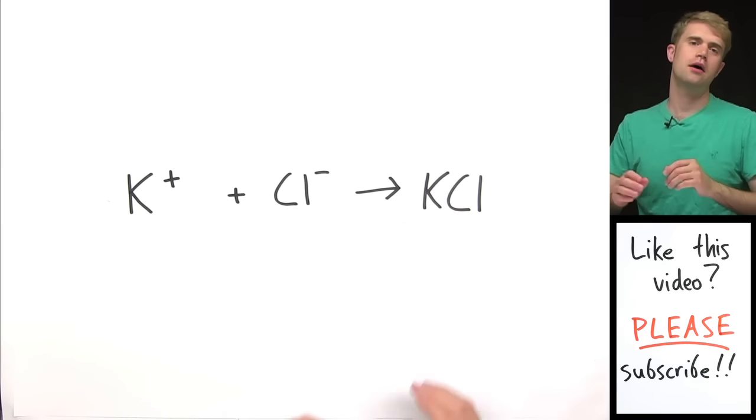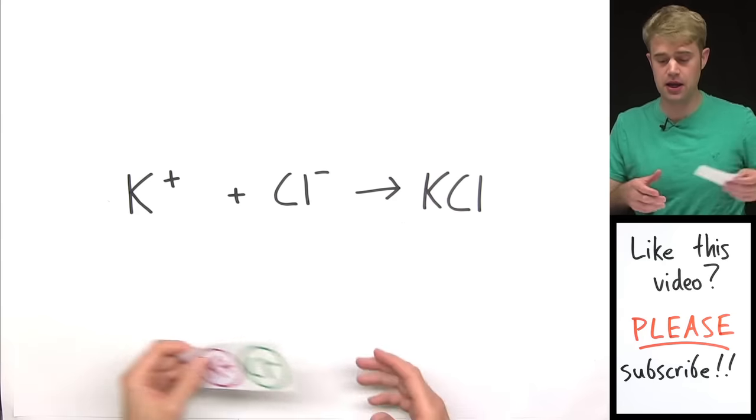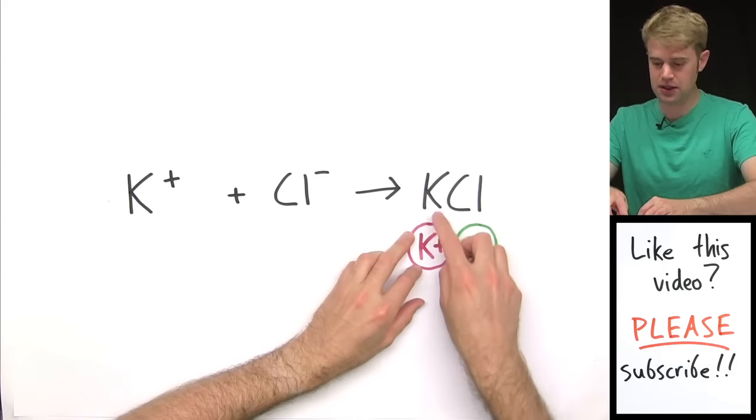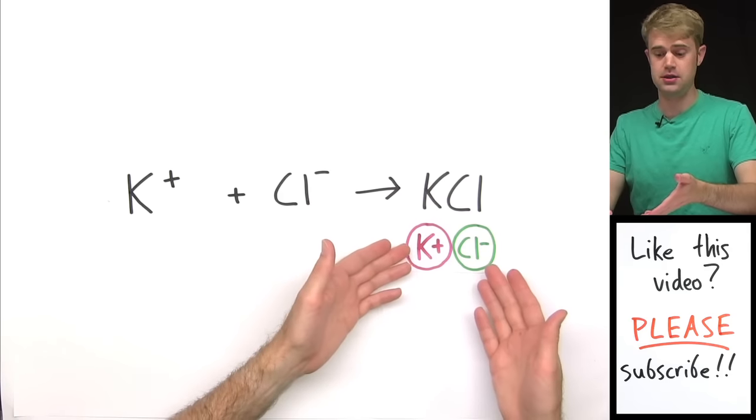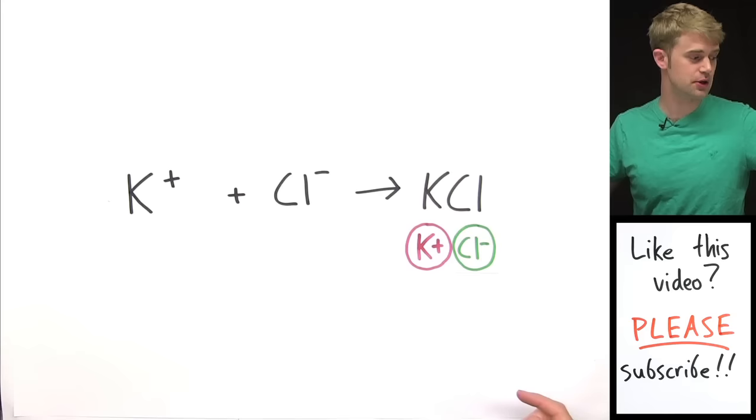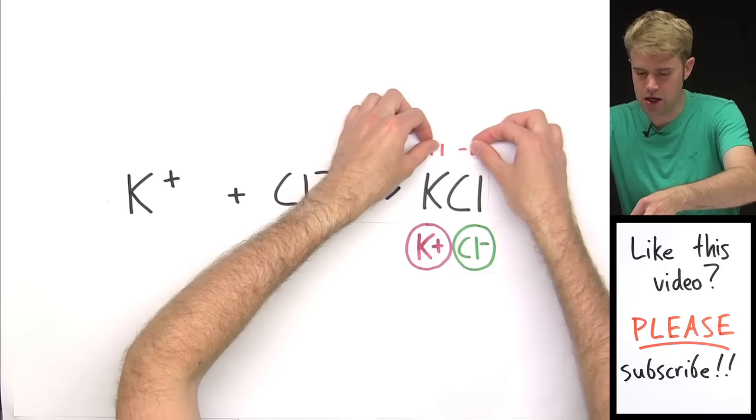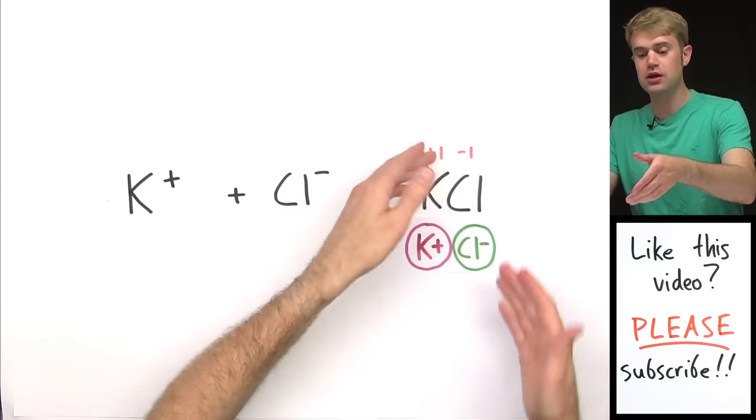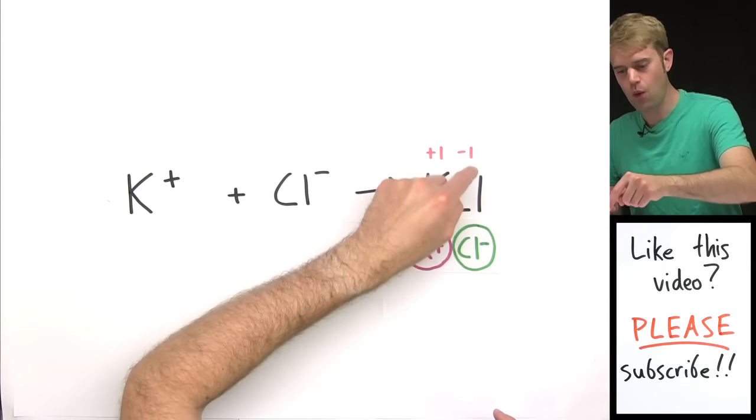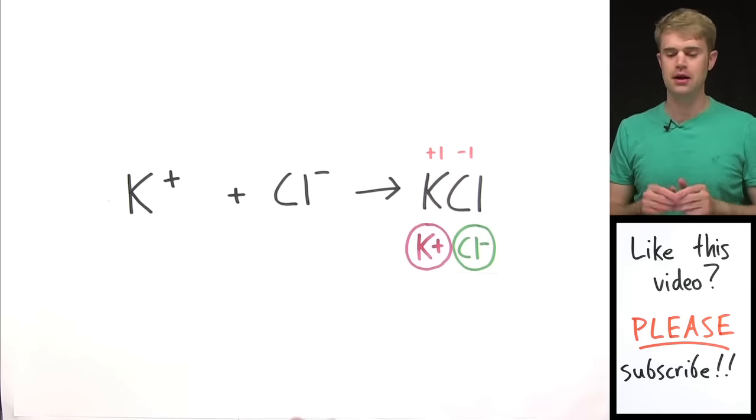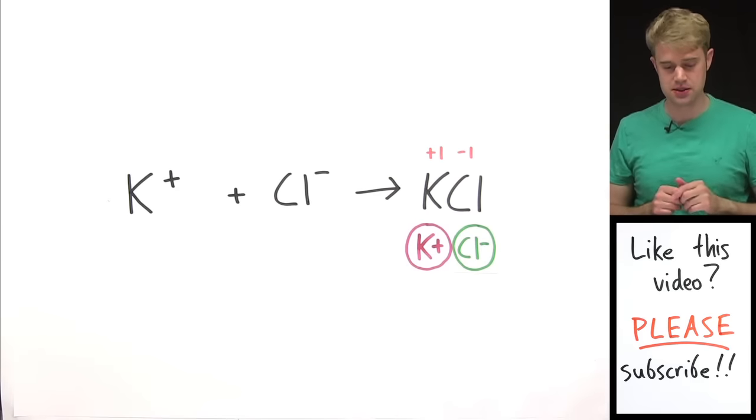So KCl here is an ionic compound, which means that it's made of ions. The K+ ion and the Cl- ion. So these atoms have charges. And we can even write numbers above these atoms to reinforce what charge they have. +1 for the K, -1 for the Cl.